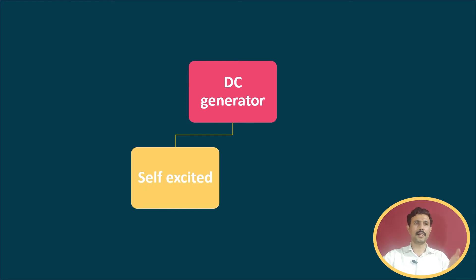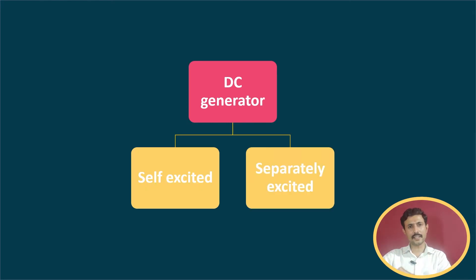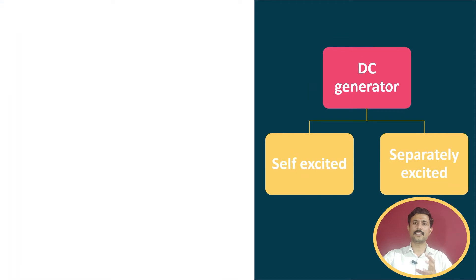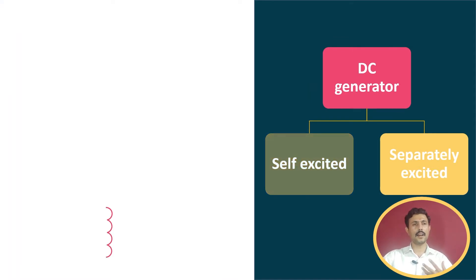The first category is the self-excited DC generator and the other is the separately excited DC generator. Now let us check the separately excited DC generator first. In a separately excited DC generator, there is a field winding which is excited through a separate source.